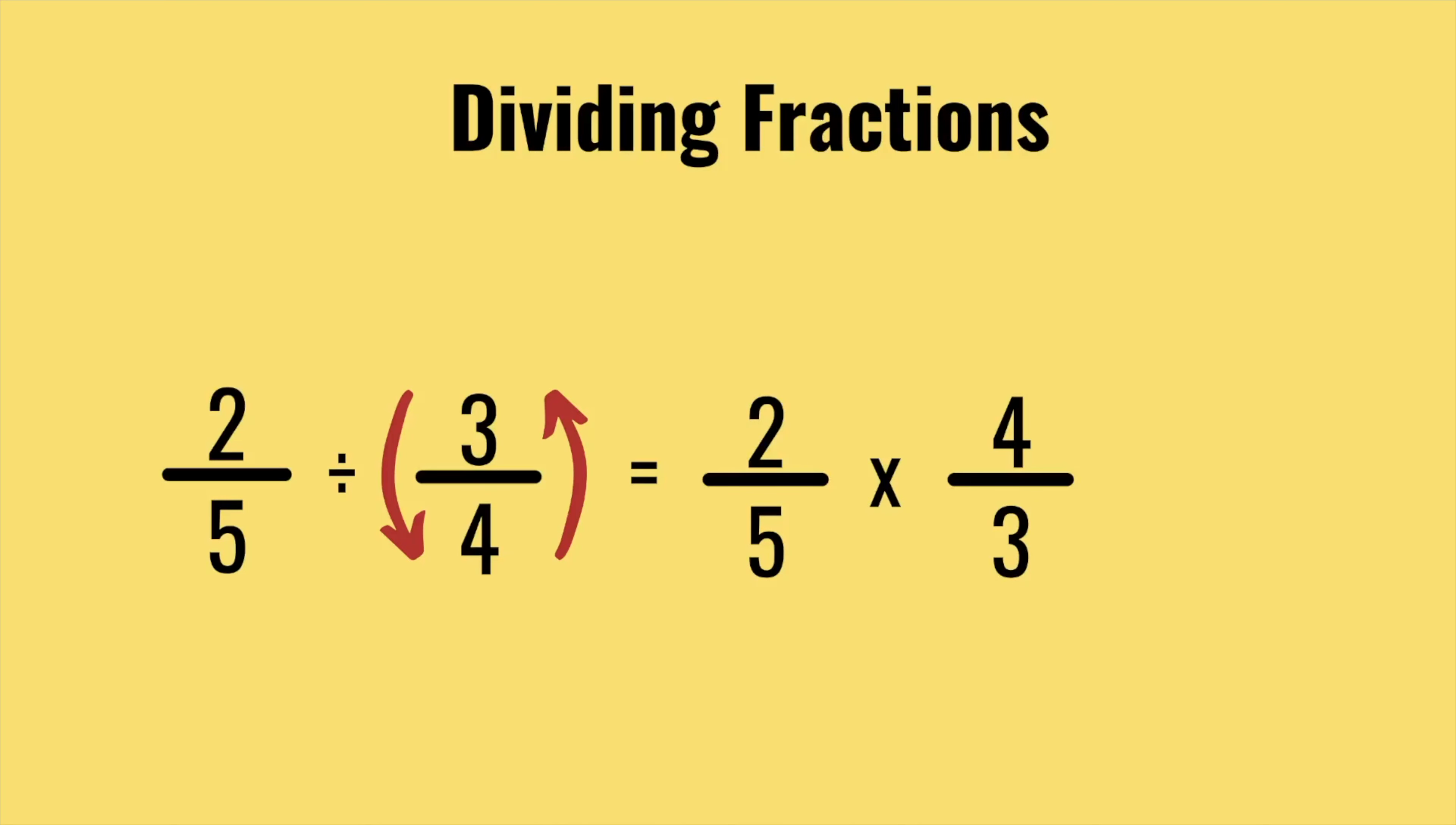So we end up with two over five multiplied by four over three. And from here it's exactly the same as multiplying fractions which we've just done. So two times by four and five times by three gets us our final answer which is eight over fifteen.